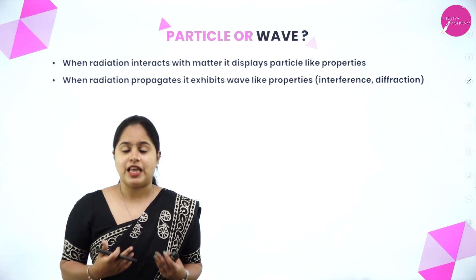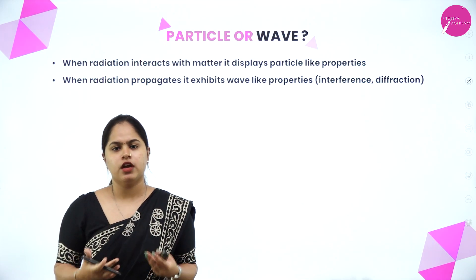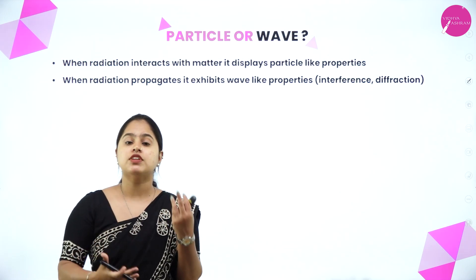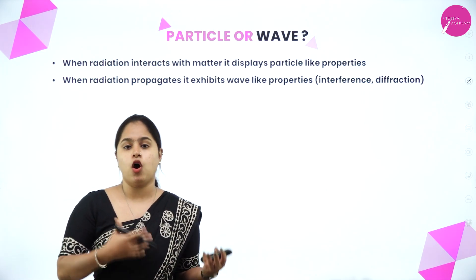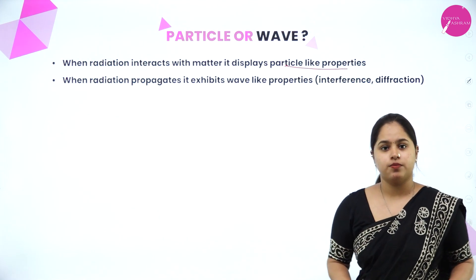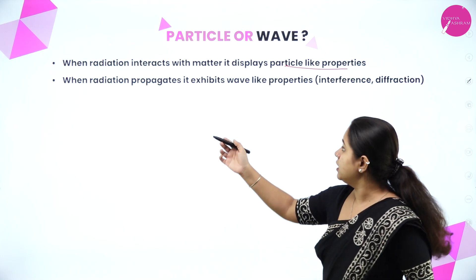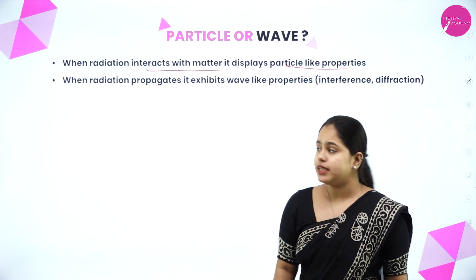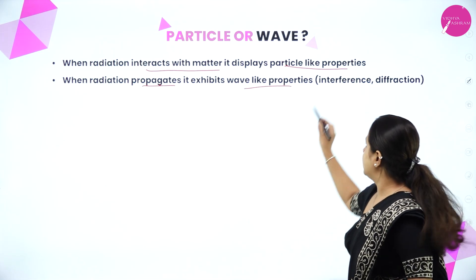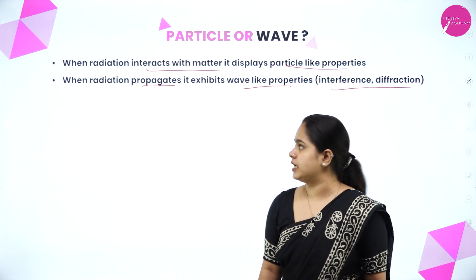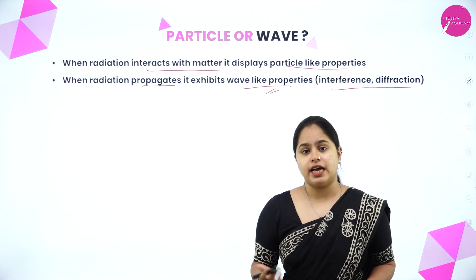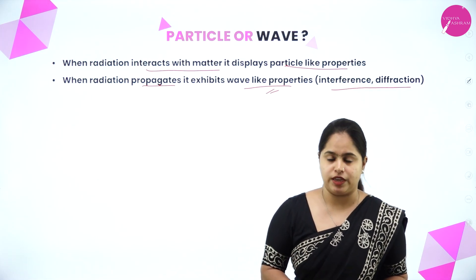We understood that electromagnetic radiation has both particle and wave nature. When radiation interacts with matter, it displays particle-like properties. When radiation is propagating or moving, it exhibits wave-like properties — examples of interference and diffraction can be taken in this case. So I hope it is clear that electromagnetic radiation behaves as particle as well as wave.